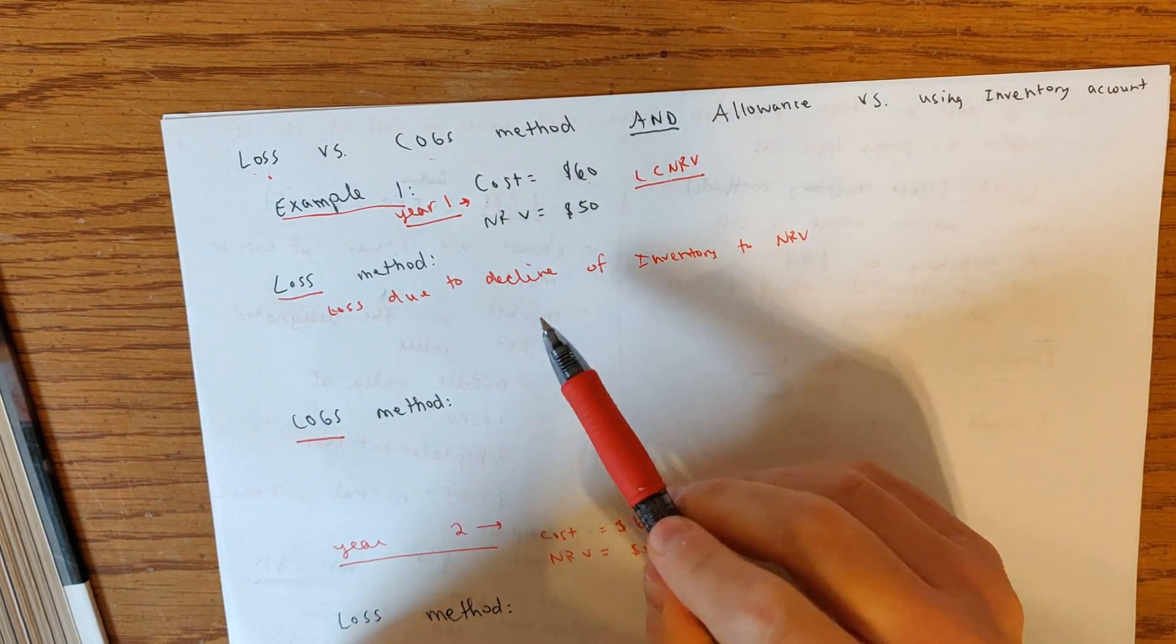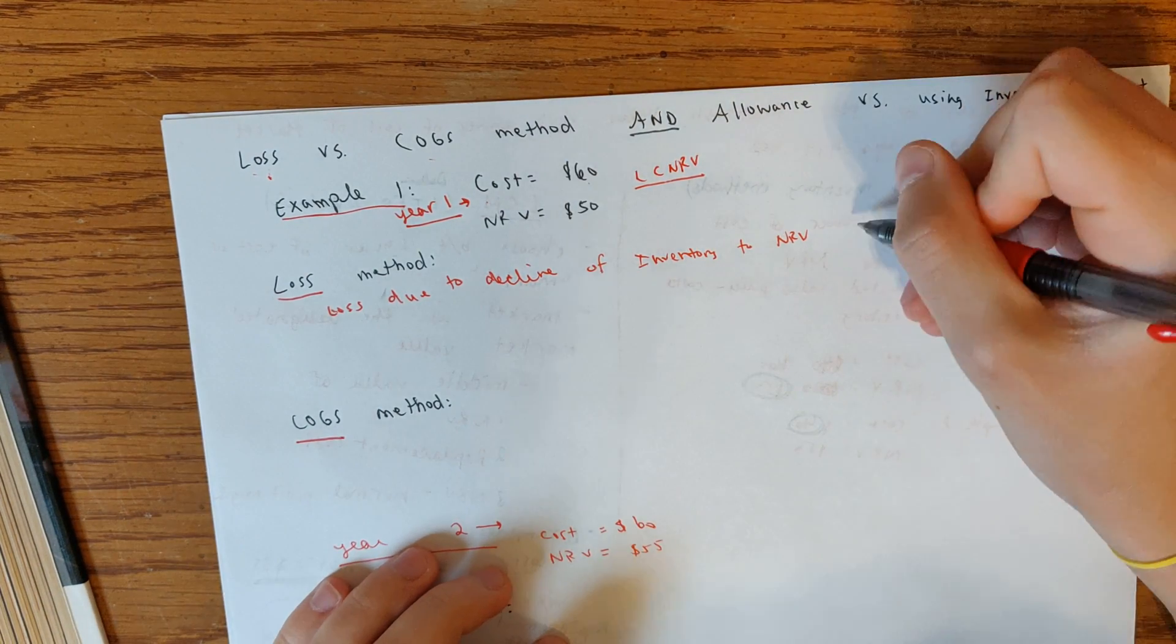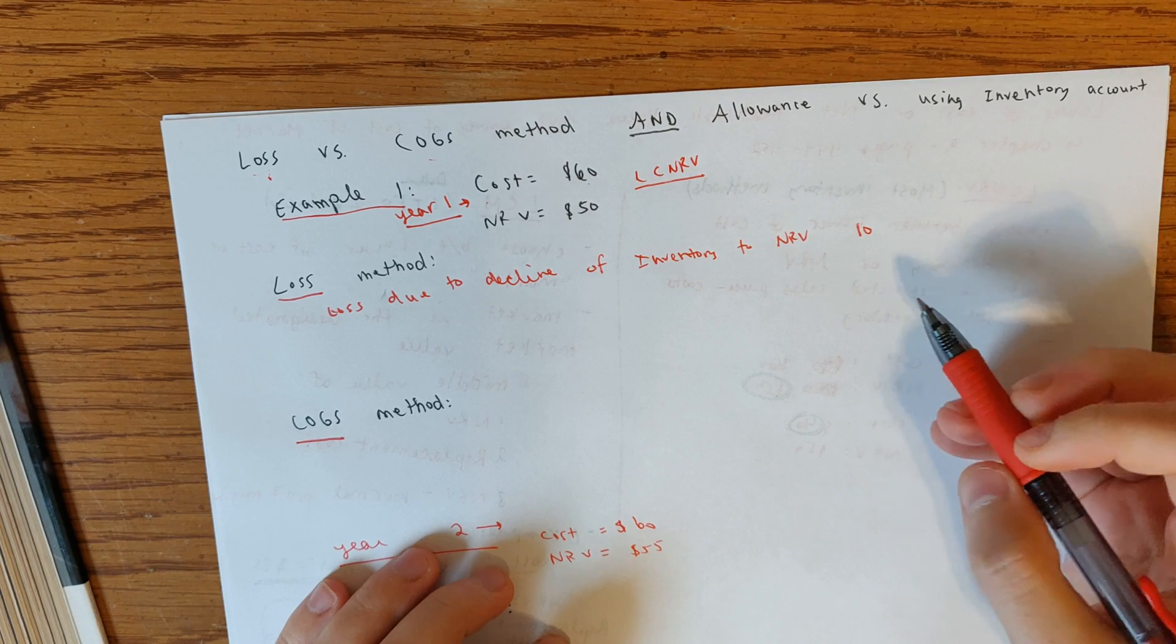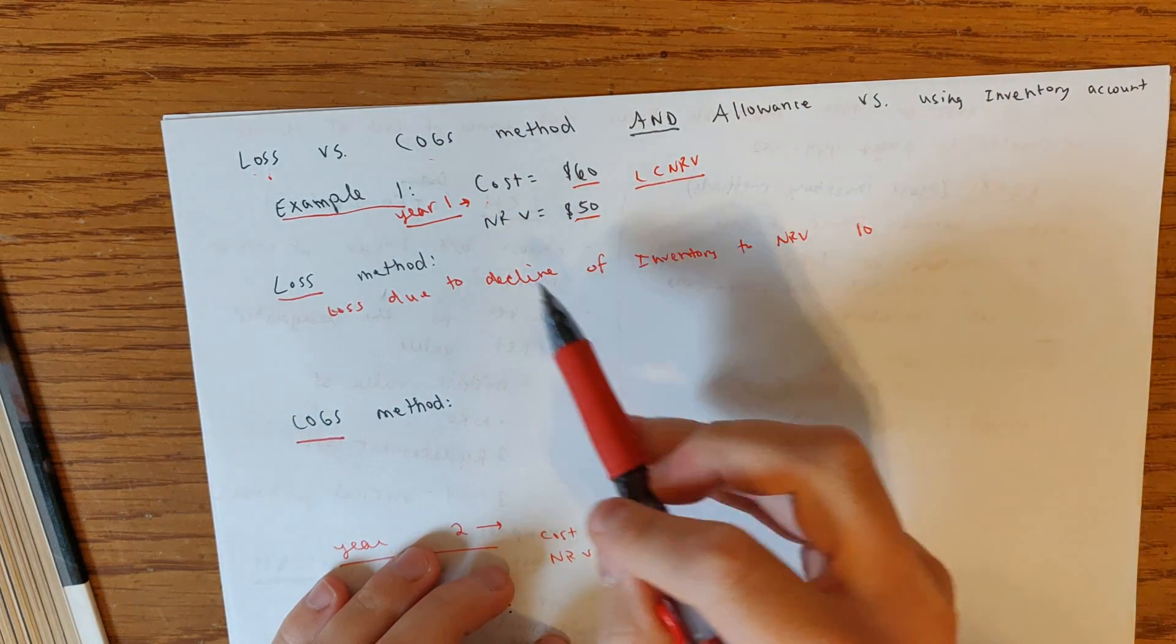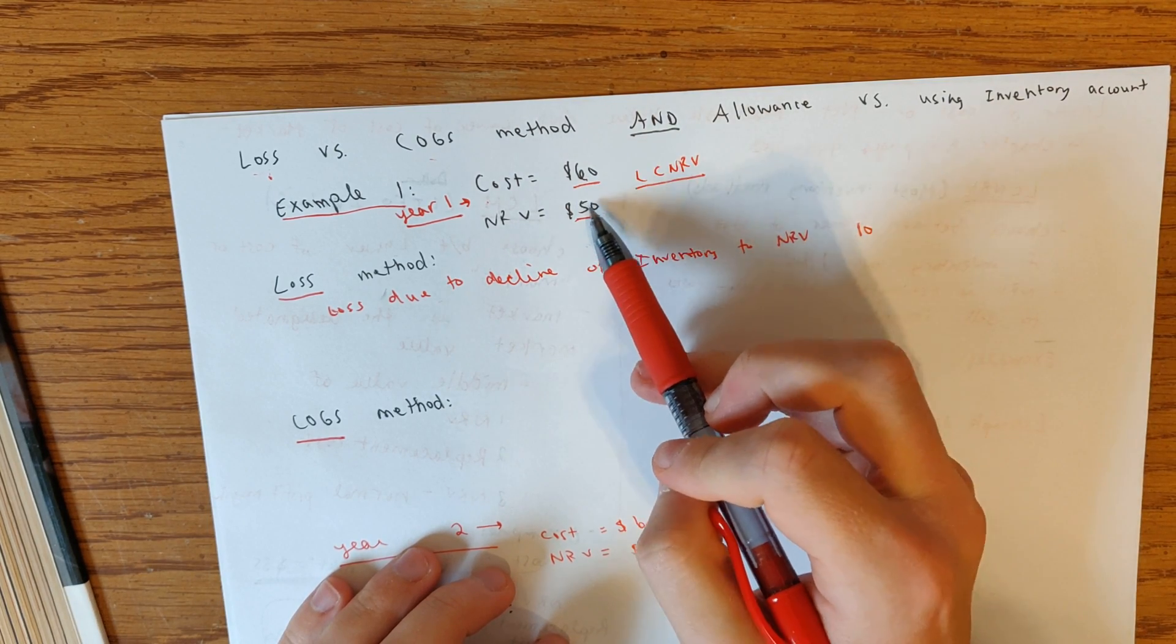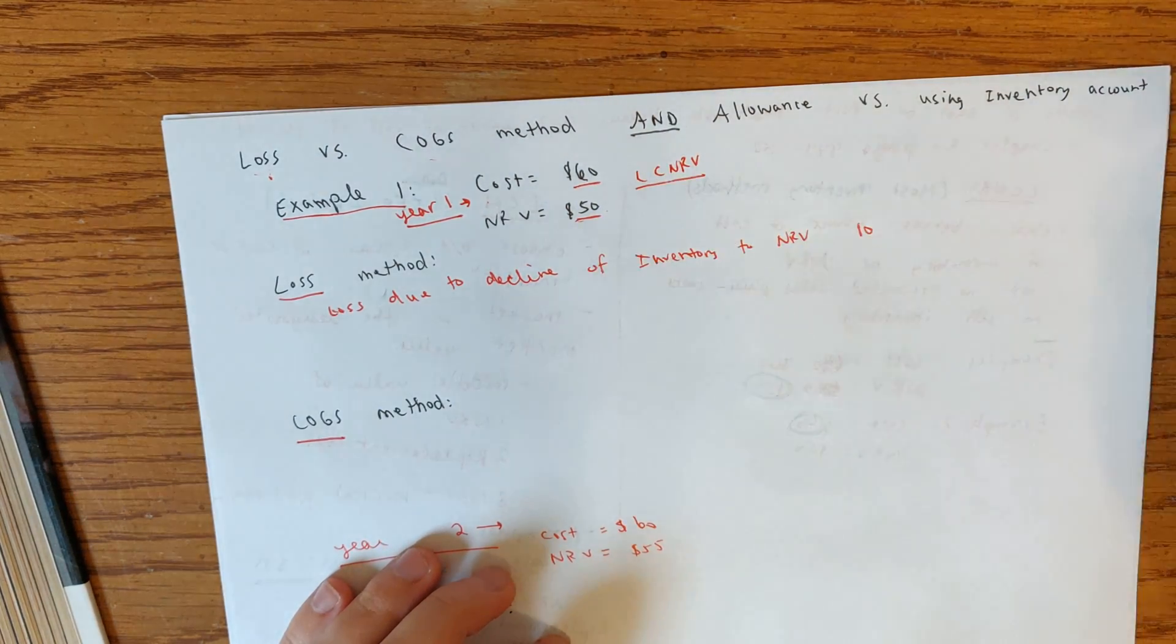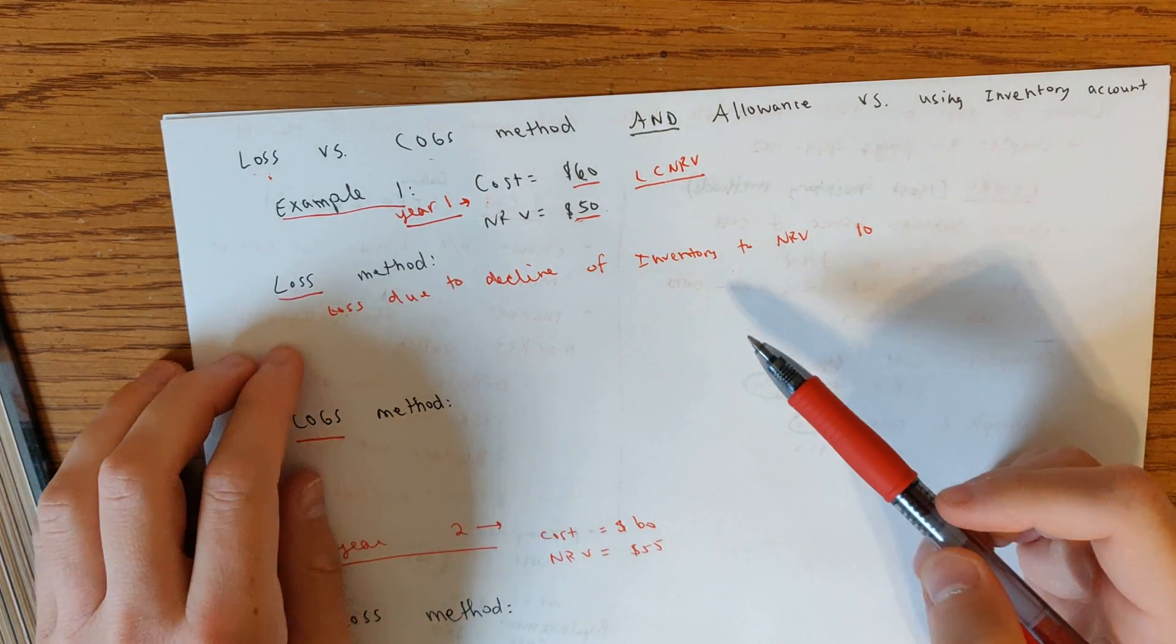So you would debit loss due to decline of inventory to net realizable value. And the debit would be for $10. And the way that we know that is that our cost is 60, but we want to write it down to 50, right? So to get on the books at 50, we have to subtract out 10. So that would be the debit if they said to do the loss method.